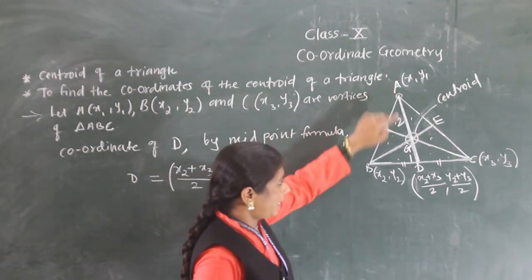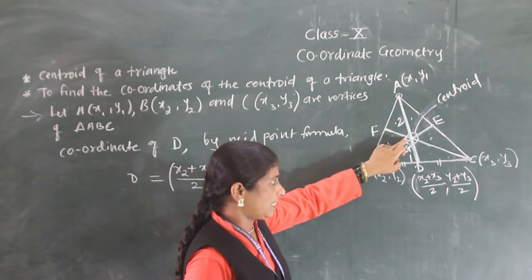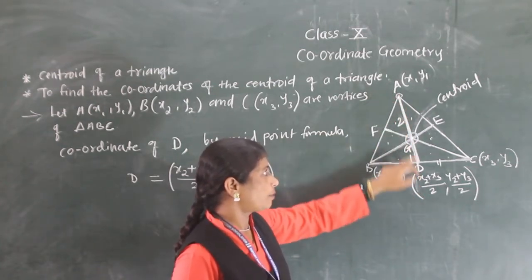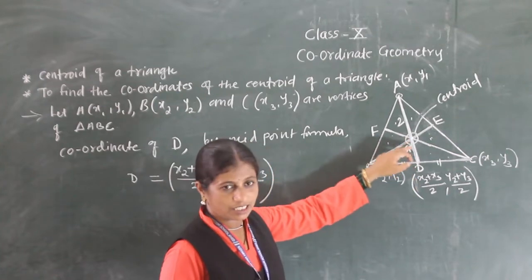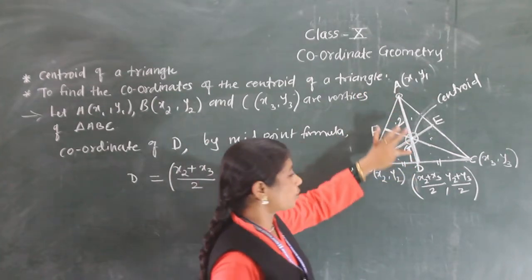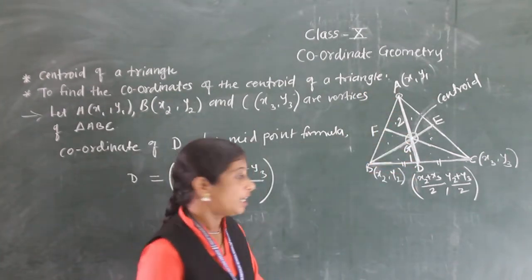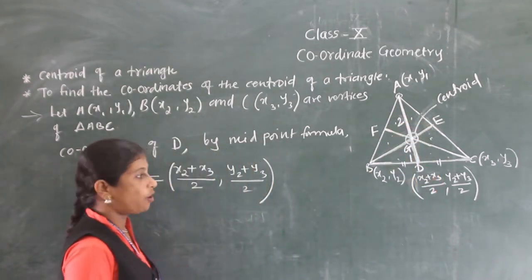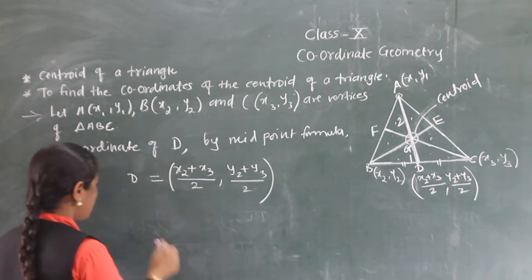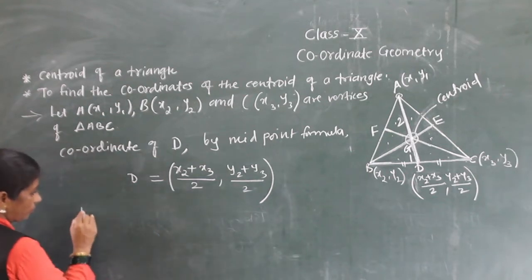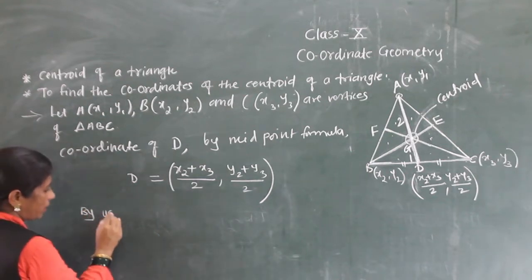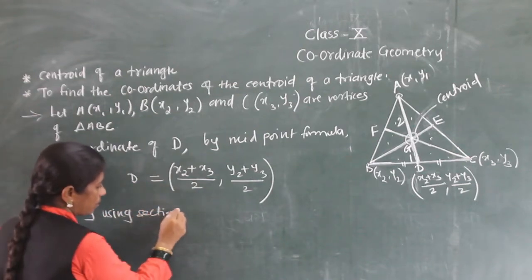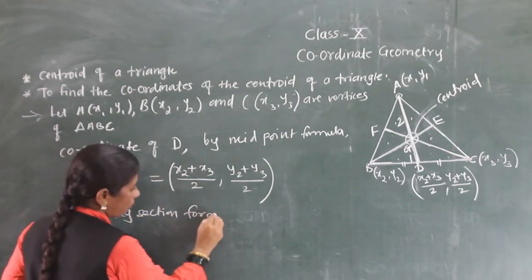Now, for point A and point D, G is a point on this median that divides AD internally in the ratio 2:1. So here we can find the coordinates of point G by using the section formula.